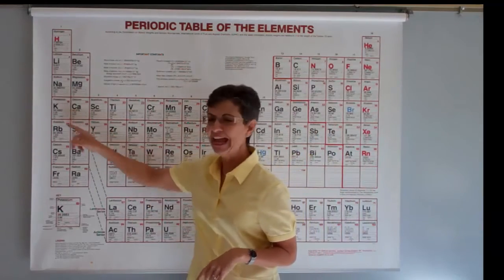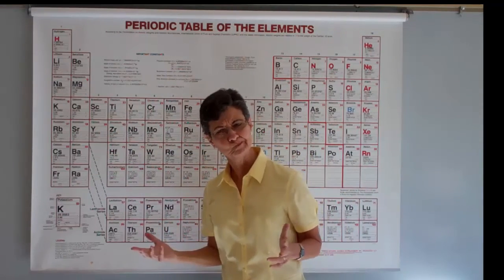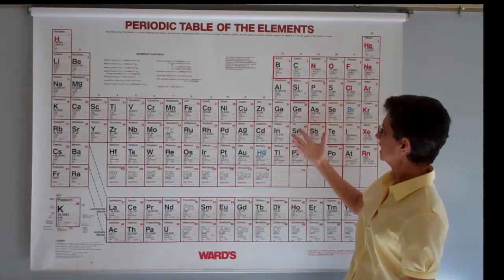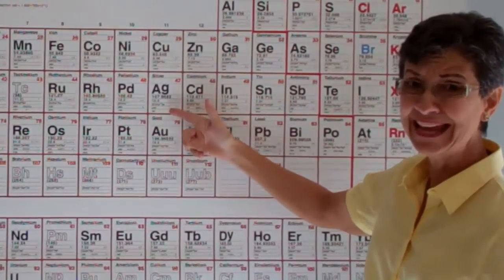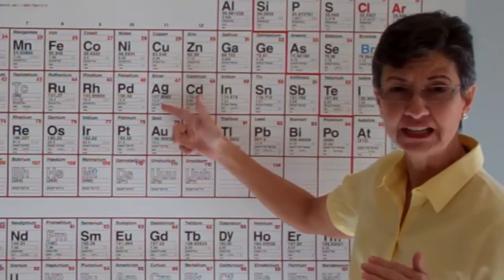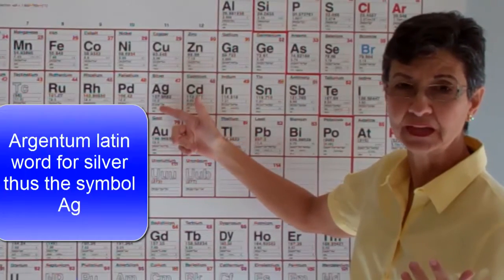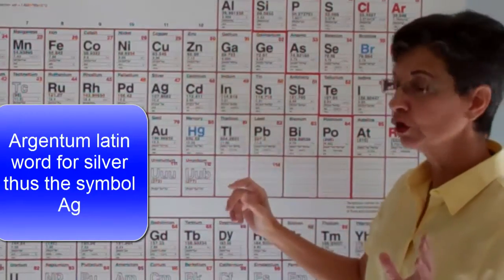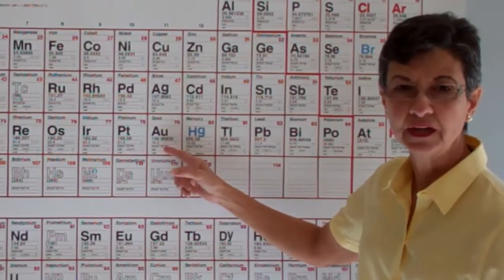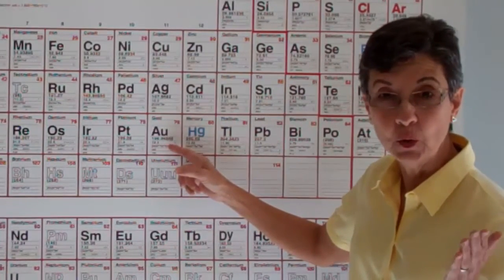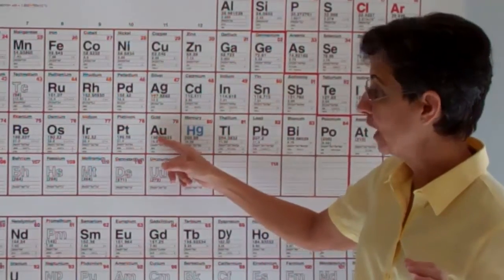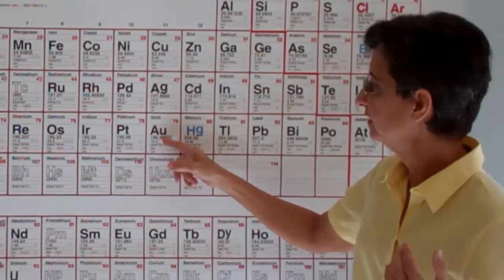For example, K is potassium. Wonder why that is. And let's say silver is Ag. The reason why this is so is Ag is Argentum. Let's look at gold, for example. Gold is Au. It is the word aurum, the Latin word for gold. So that's why we say the symbol is Au for gold.